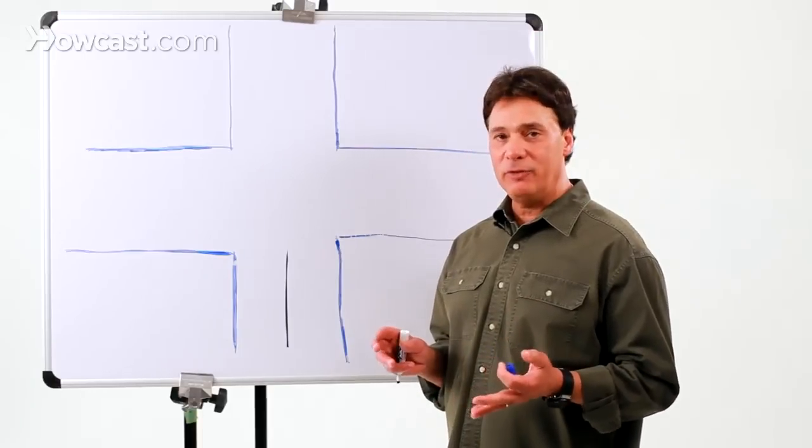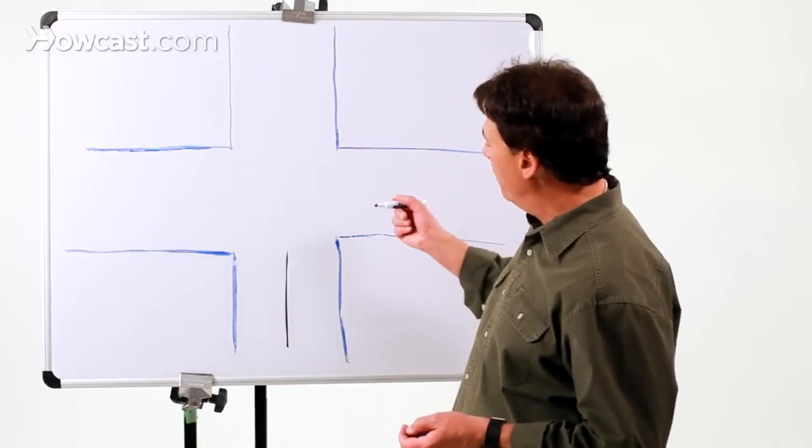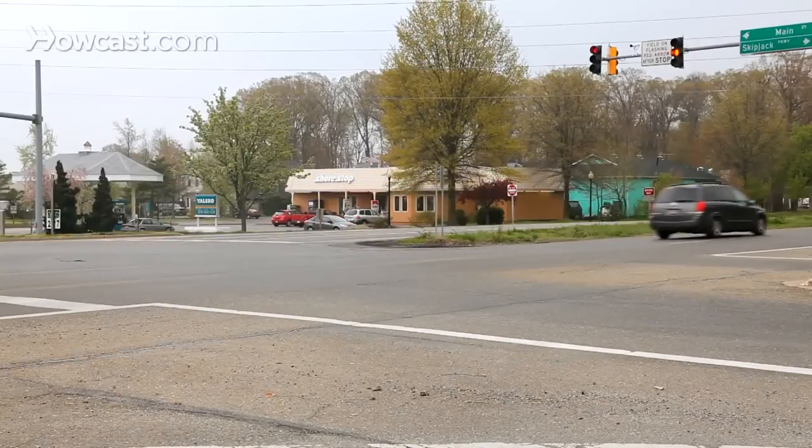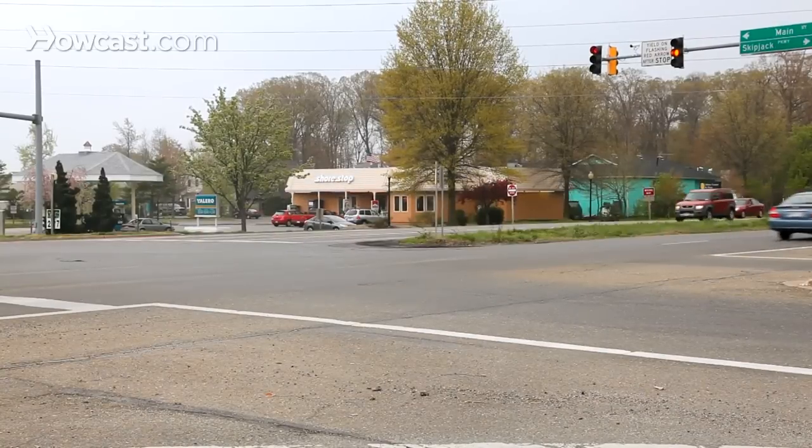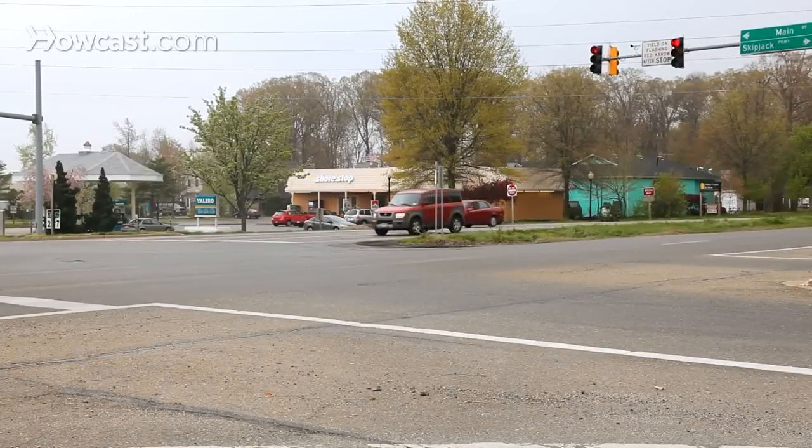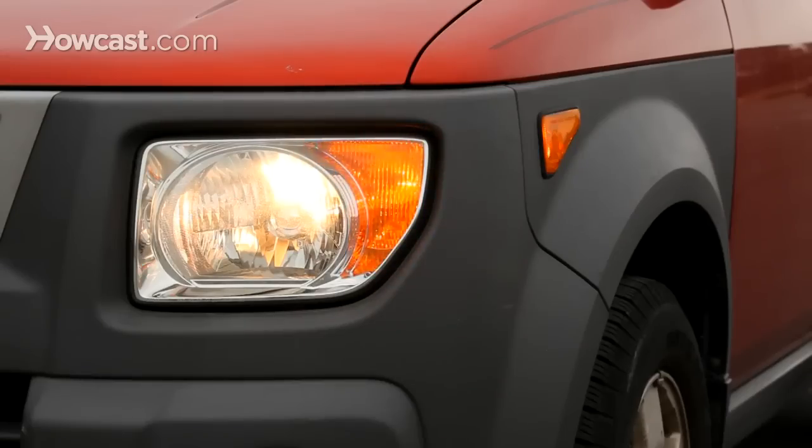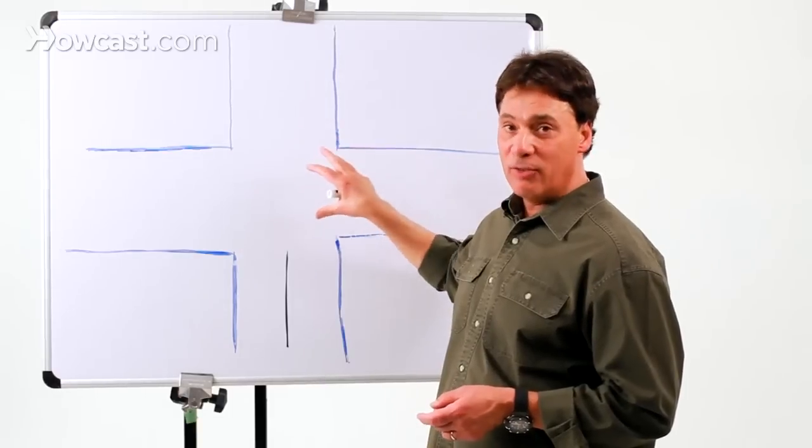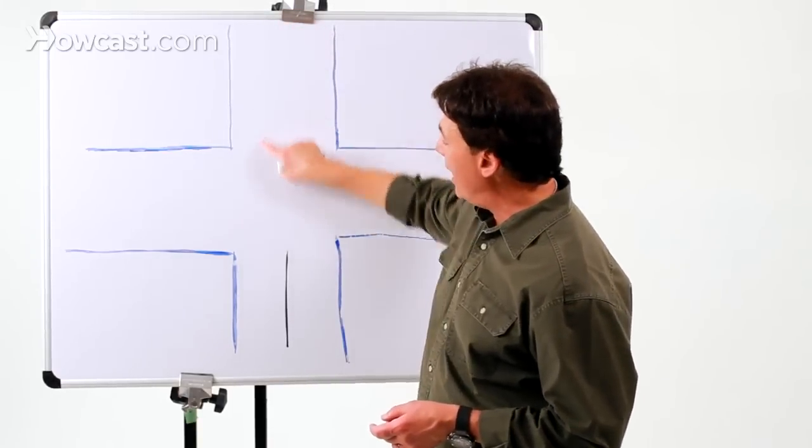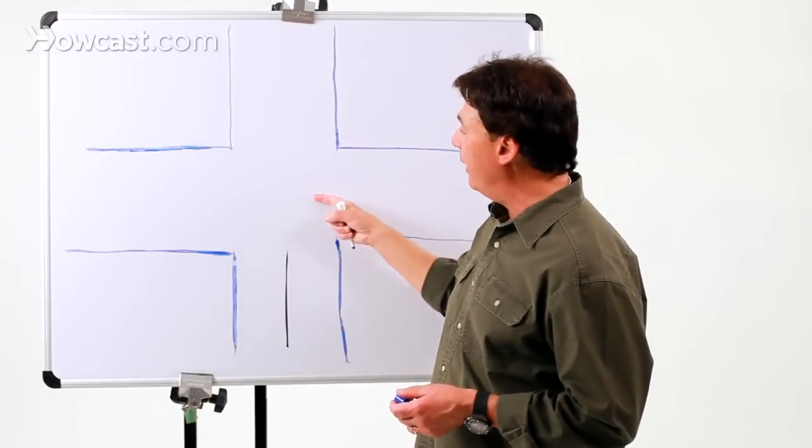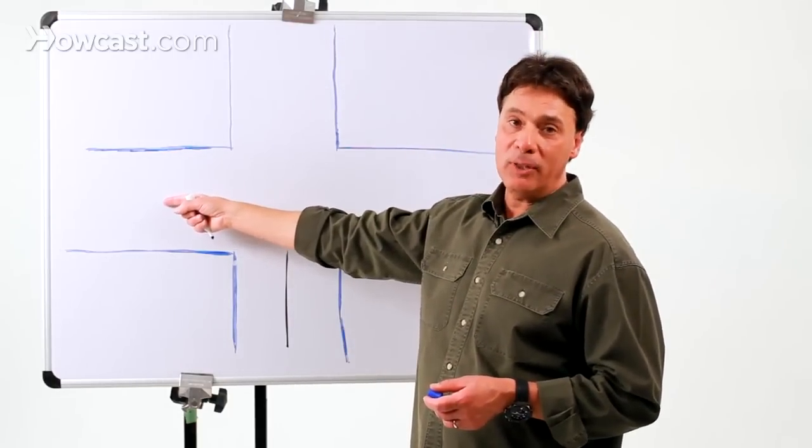We'll start with a basic left turn. What we want to remember on the left turn is that cars going straight have the right of way over cars that are turning. So if we're here waiting to make a left turn, and there are a number of cars which are going straight, and we both have a green light, the cars that are going straight have the right of way, which means that we have to wait for them before we make our left turn.